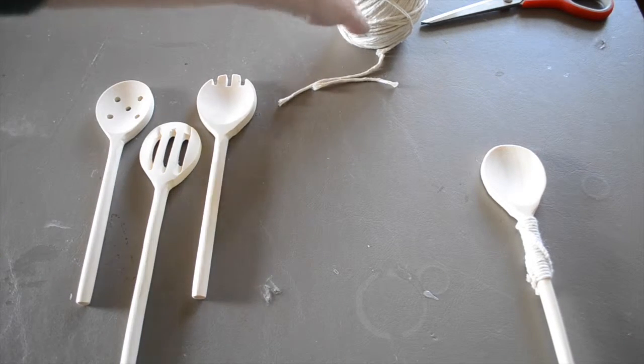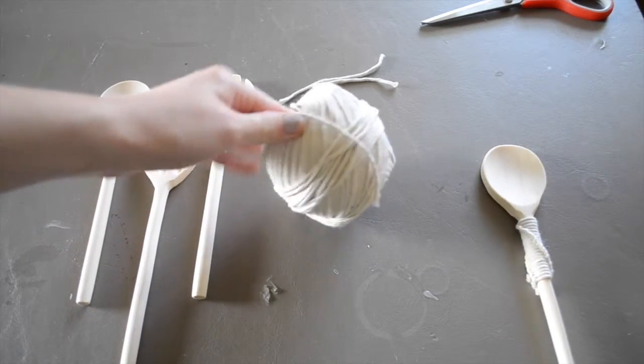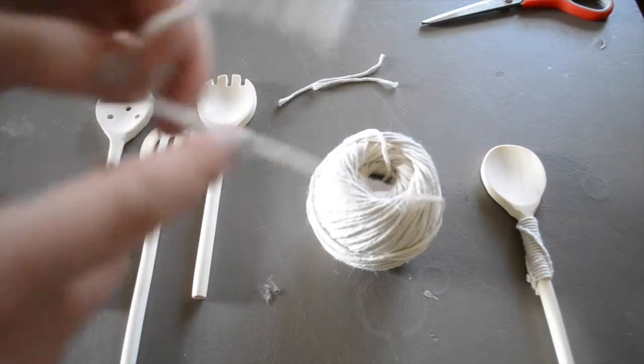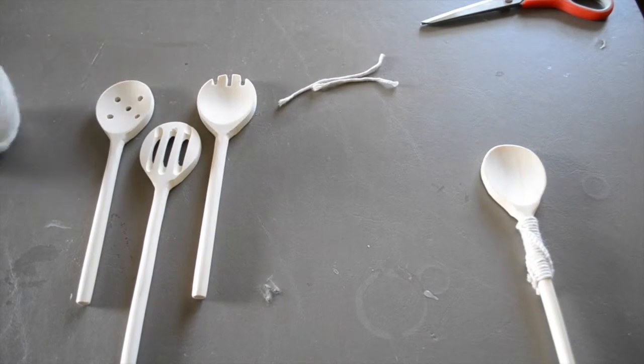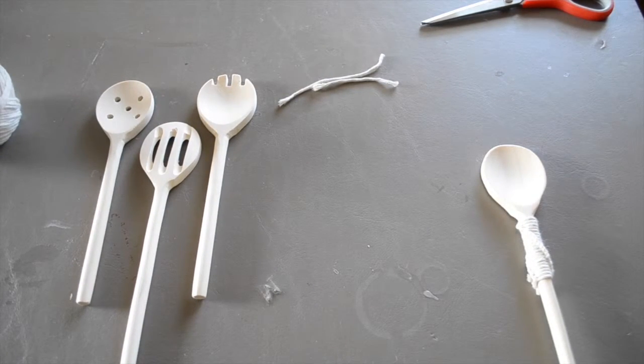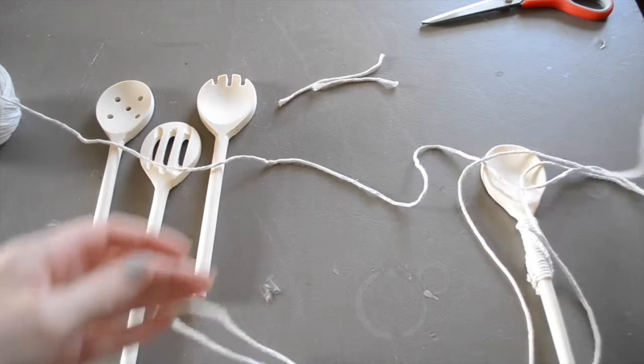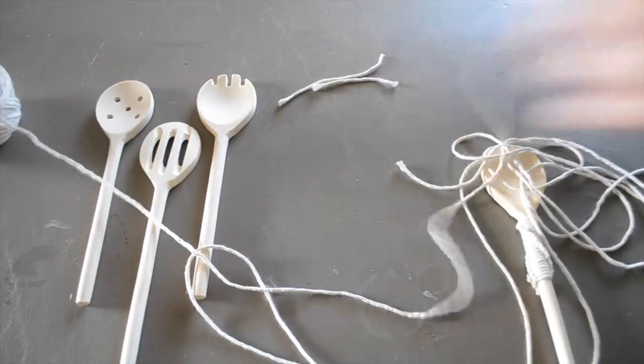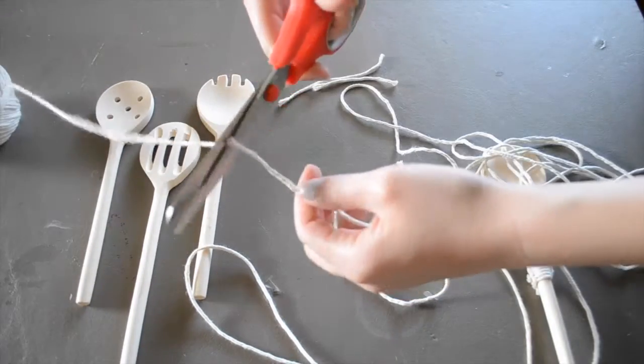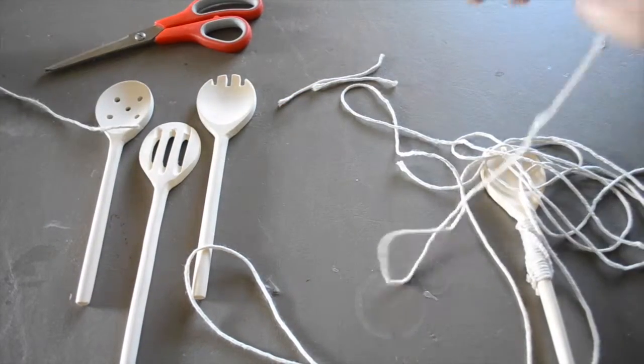The first step is cutting a piece of this baker's twine. I'm going to cut a really long piece, about five or six feet. It's okay if you have some extra; you just want to make sure you have enough to get as far down the handle as you'd like. So I'm going to go ahead and just cut that, just like so.